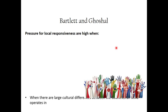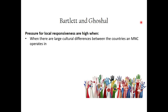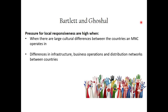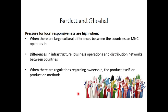The pressure for local responsiveness tends to be high when there are large cultural differences between the countries that an MNC operates in, and therefore the products might need to be adapted. If there are differences in infrastructure, business operations, and distribution networks between countries, that may require some degree of specializing in how we produce or manufacture the product. Or maybe there are different regulations regarding ownership, the product itself, or production methods — a famous example being that in Sweden, cars were required to have their lights on at all times.